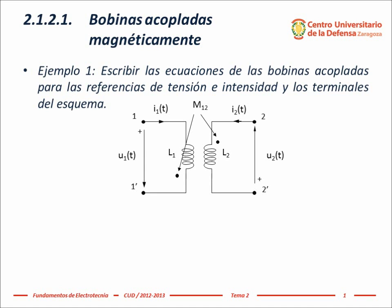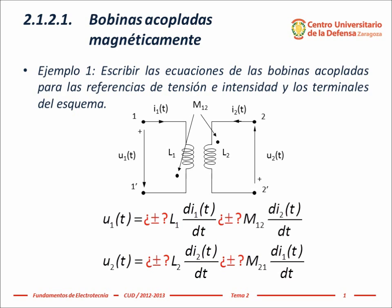This video illustrates a method for determining the signs in the coupled coil equations. In the equations of magnetically coupled coils, the voltage in each coil depends not only on the current flowing through it, but also on the current flowing through the coil to which it is coupled.